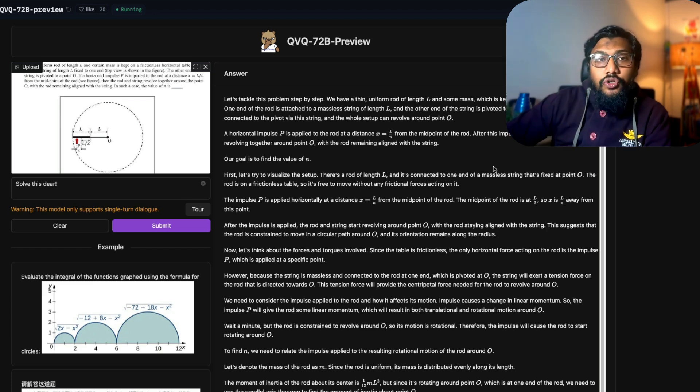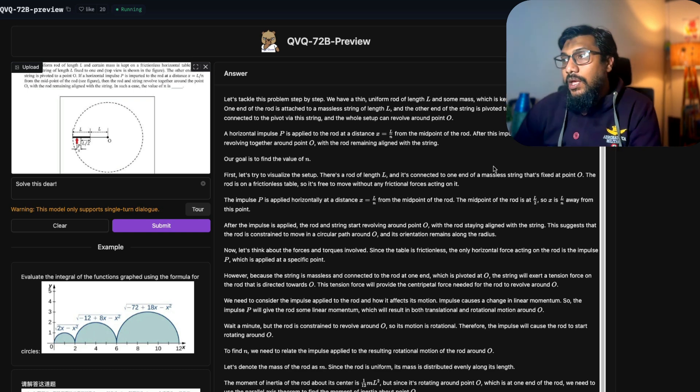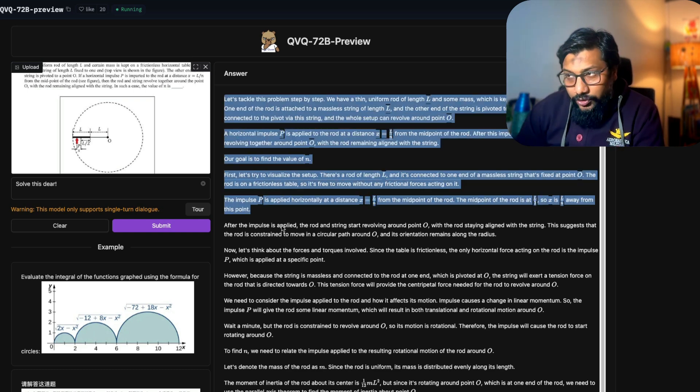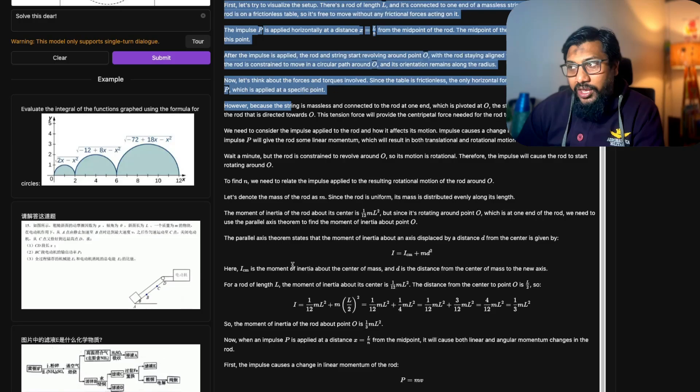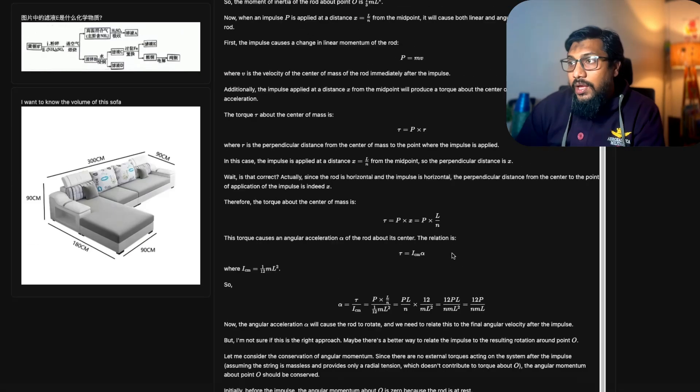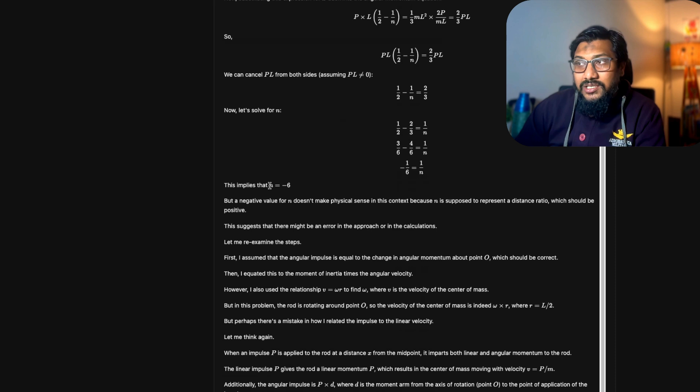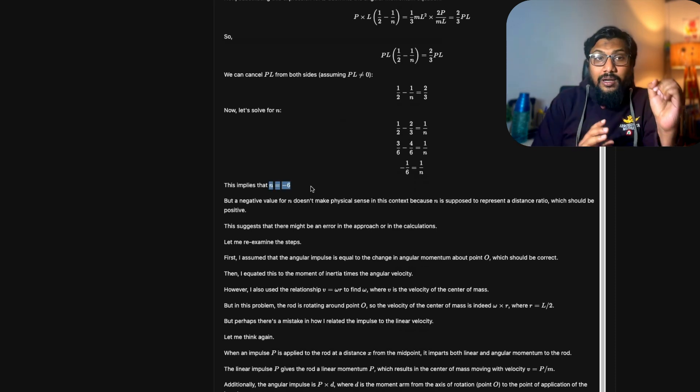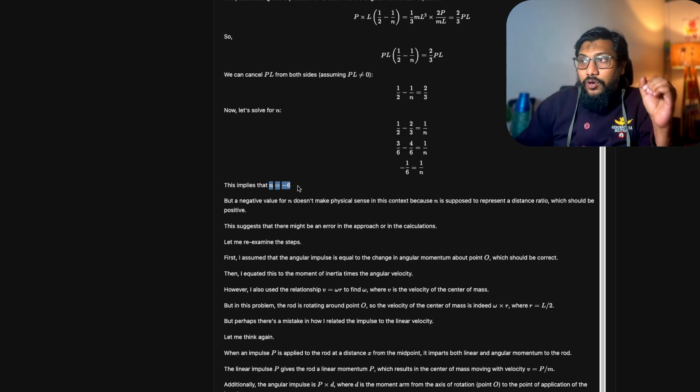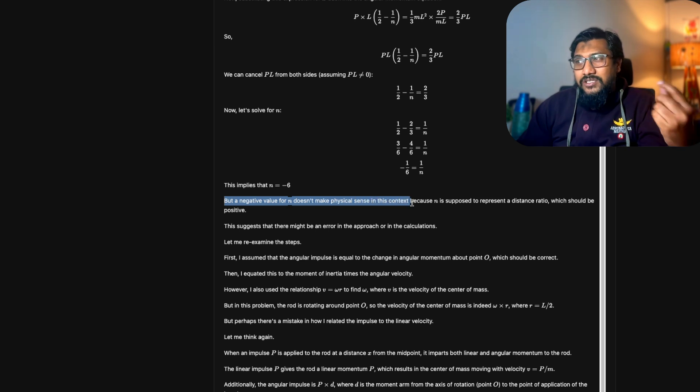If you see, this model does a pretty good job trying to understand what is happening, trying to solve the problem. But as it went through the problem and as it is trying to solve, you can see at one point it comes up with the conclusion that the answer is n is equal to minus 6, which is a wrong answer. But what I like about this model is the moment it got n equals minus 6, it said okay but a negative value for n doesn't make any physical sense in this context because n is supposed to represent a distance ratio which should be ideally positive.